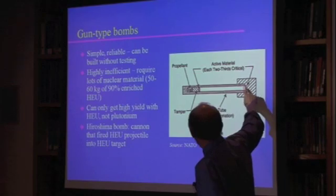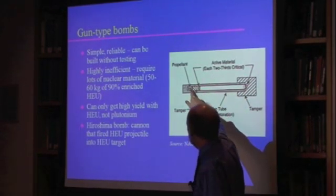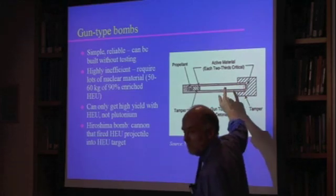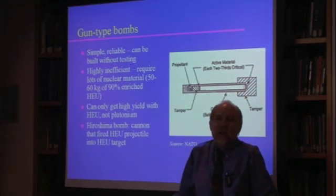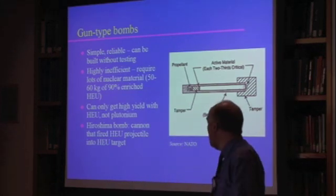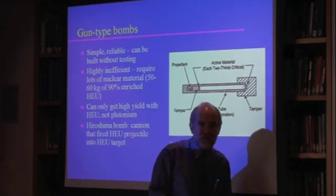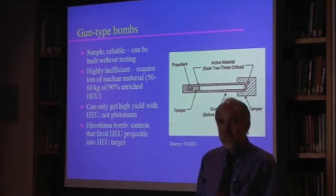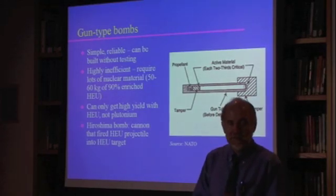Basic idea is you have a piece of highly enriched uranium and you have a piece of highly enriched uranium, you have some explosives and you fire it down the barrel. So the two come together pretty fast, not any faster than a normal cannon, but basically as fast as a cannon shell moving down a barrel. And the bomb that destroyed Hiroshima literally was a cannon that fired an HEU projectile into another chunk of HEU.